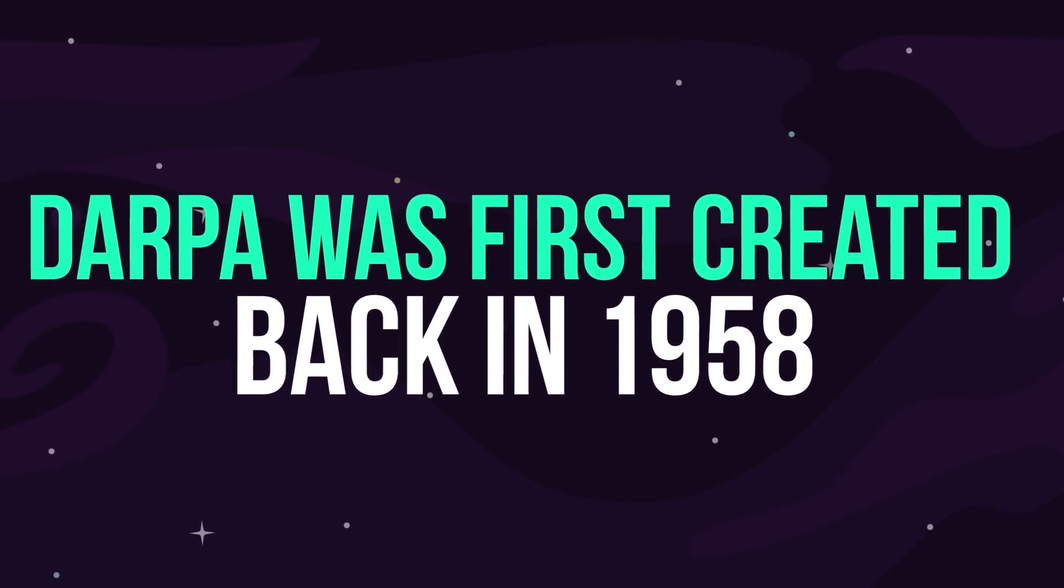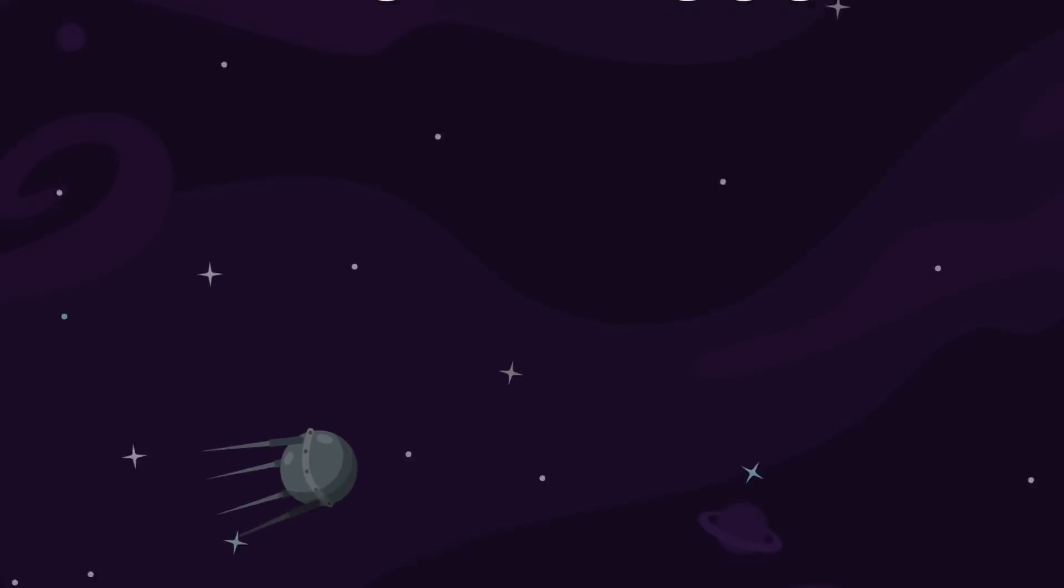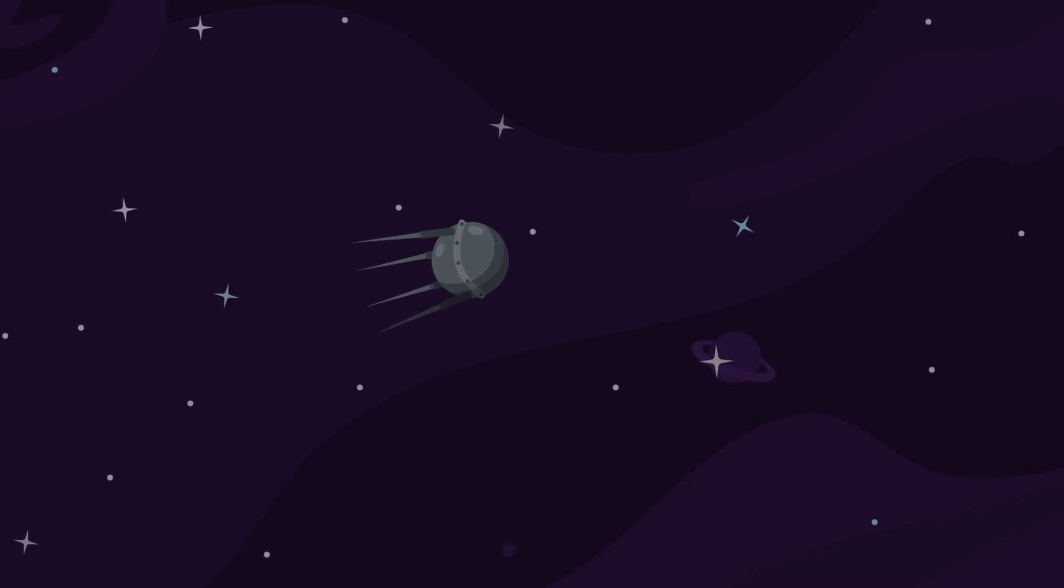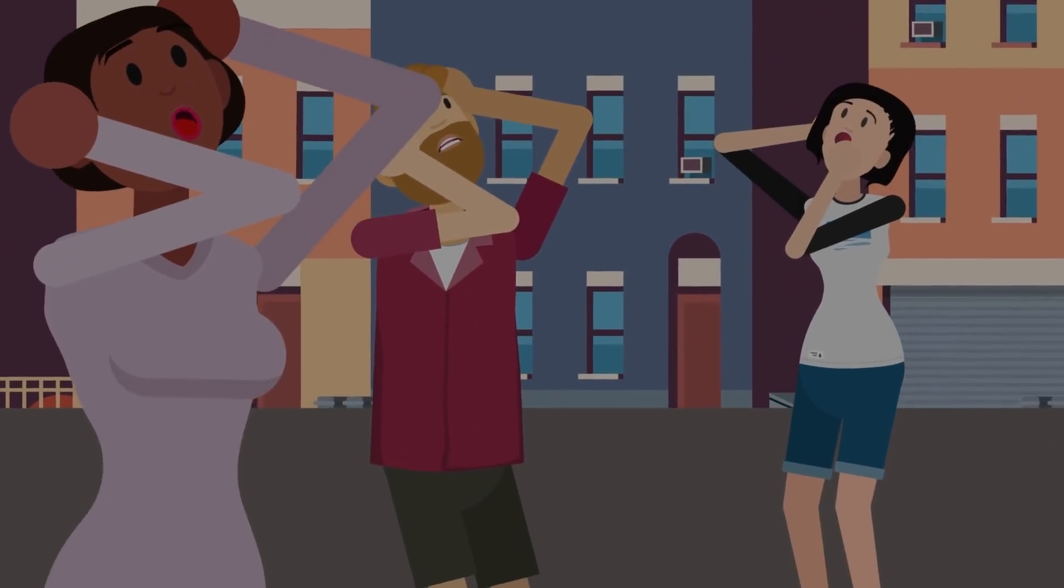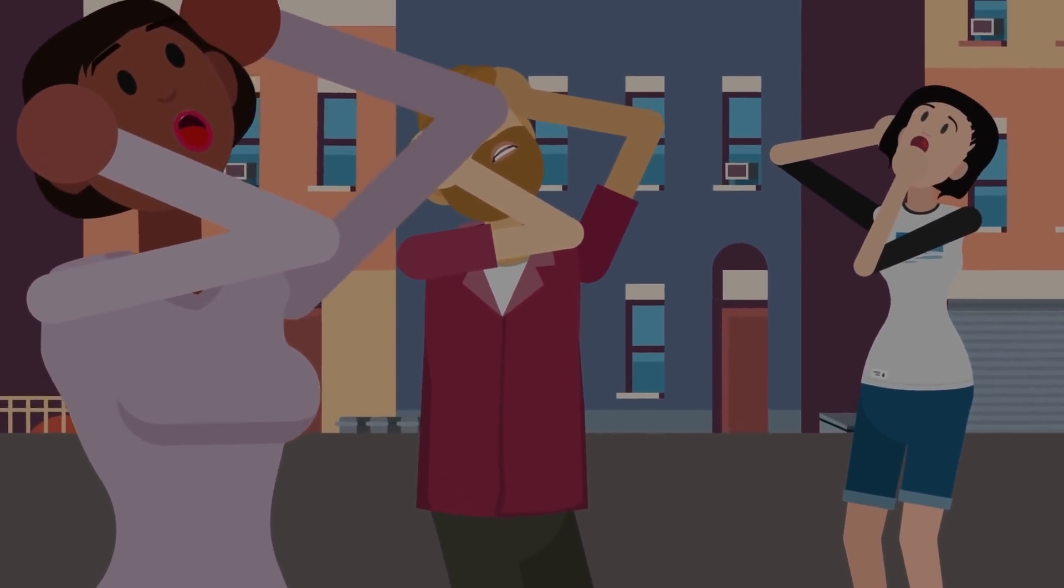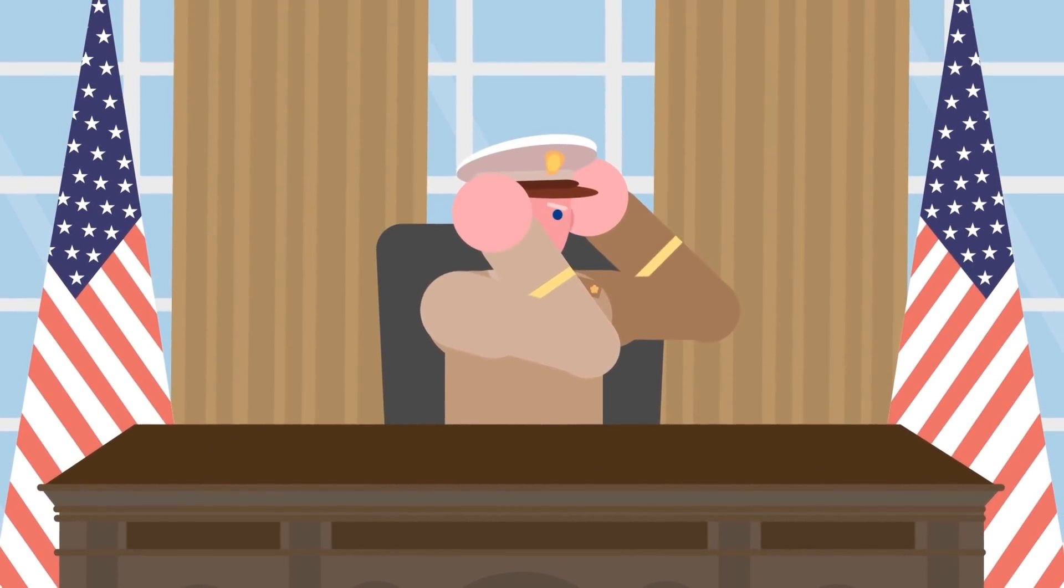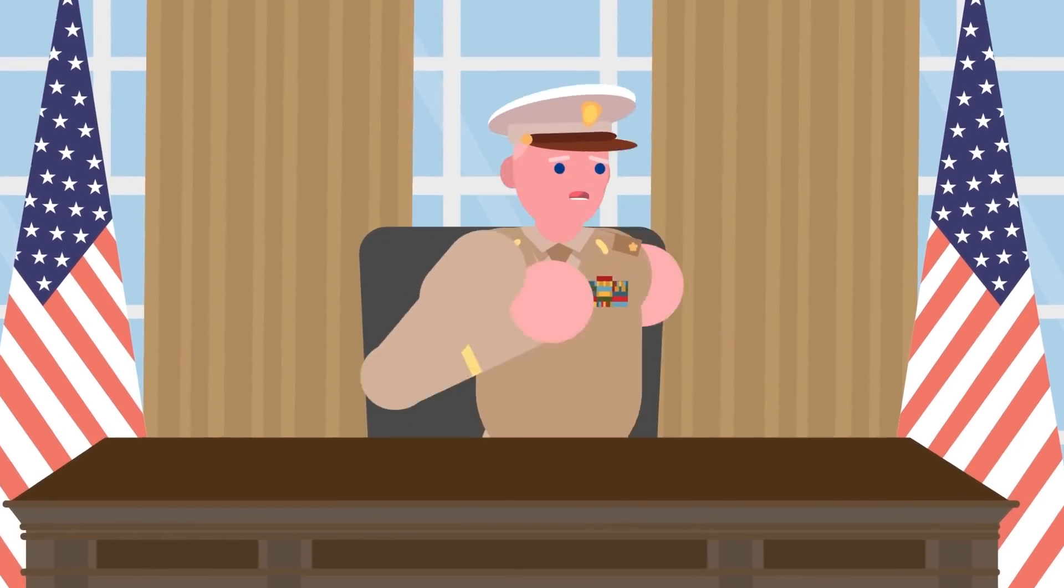DARPA was first created back in 1958. The Soviets had just launched the unmanned probe Sputnik into space, and people across the US were starting to feel nervous. President Dwight D. Eisenhower didn't intend to take Russia's leap into the stars lying down.